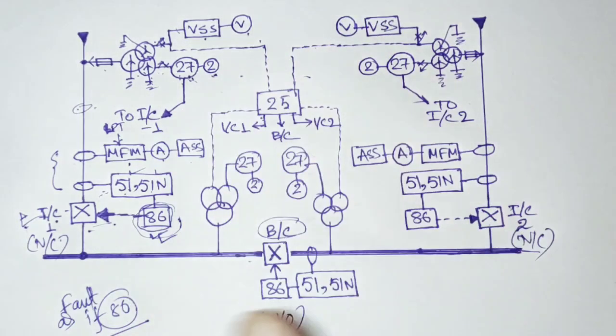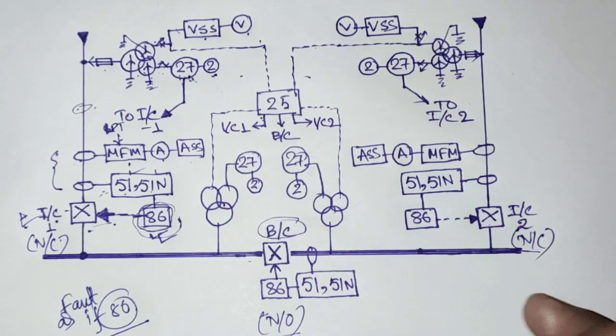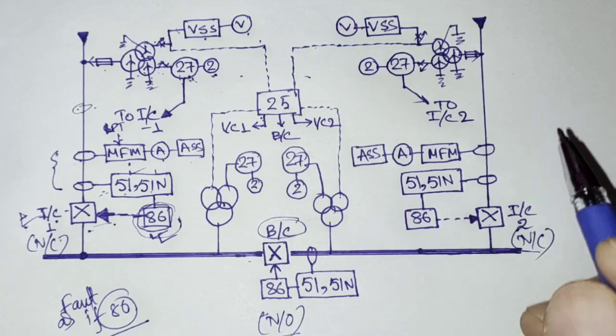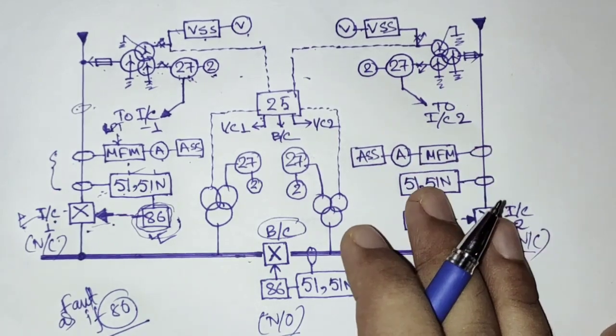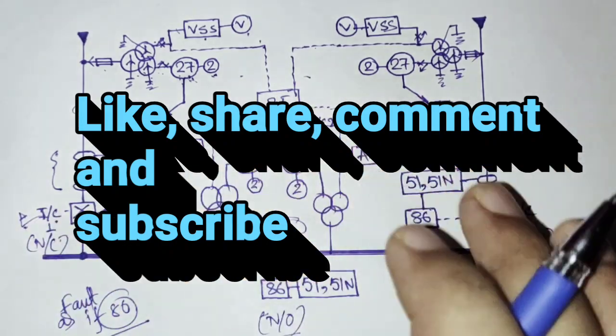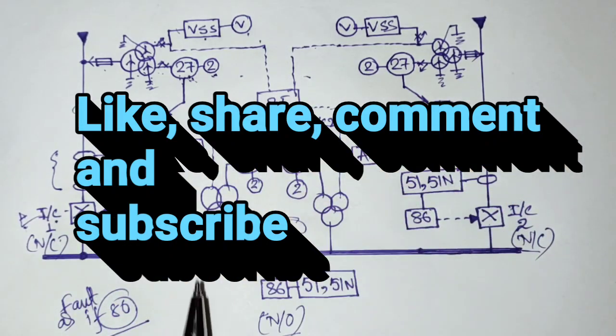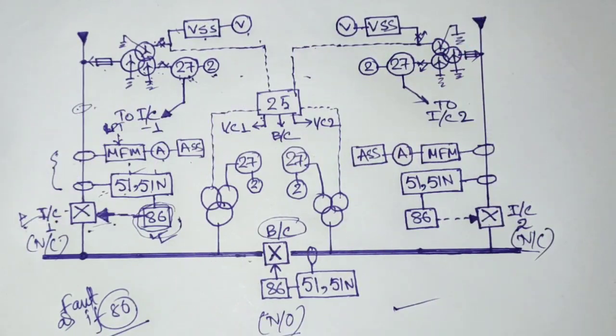So this is the metering and protection circuit of incomer and bus coupler. I will make further video on the outgoing metering protection SLD. So we will understand this better. So I hope you have enjoyed this part of the video and understand this part of the video. Now in the next video I will be explaining all the interlocks how these circuits are actually connected. So thank you very much for watching this video.